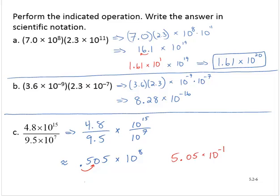All right. So we have 5.05 times 10 to the negative 1st. And let's multiply that by 10 to the 8th. And so then that would give us 5.05 times 10 to the 7th power.